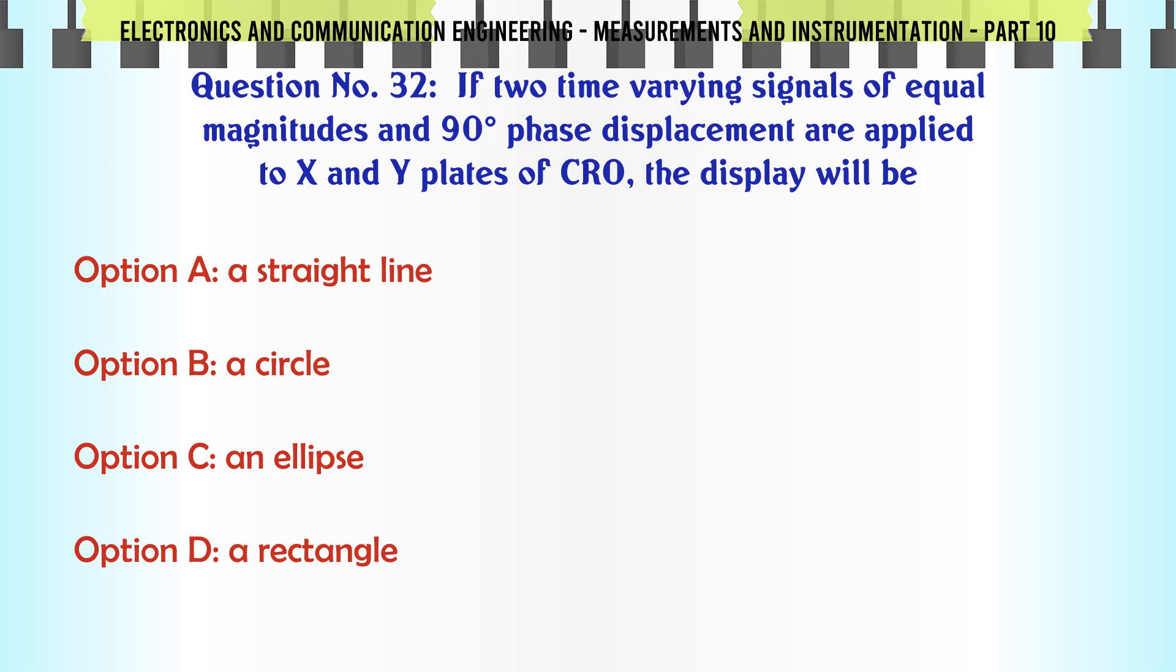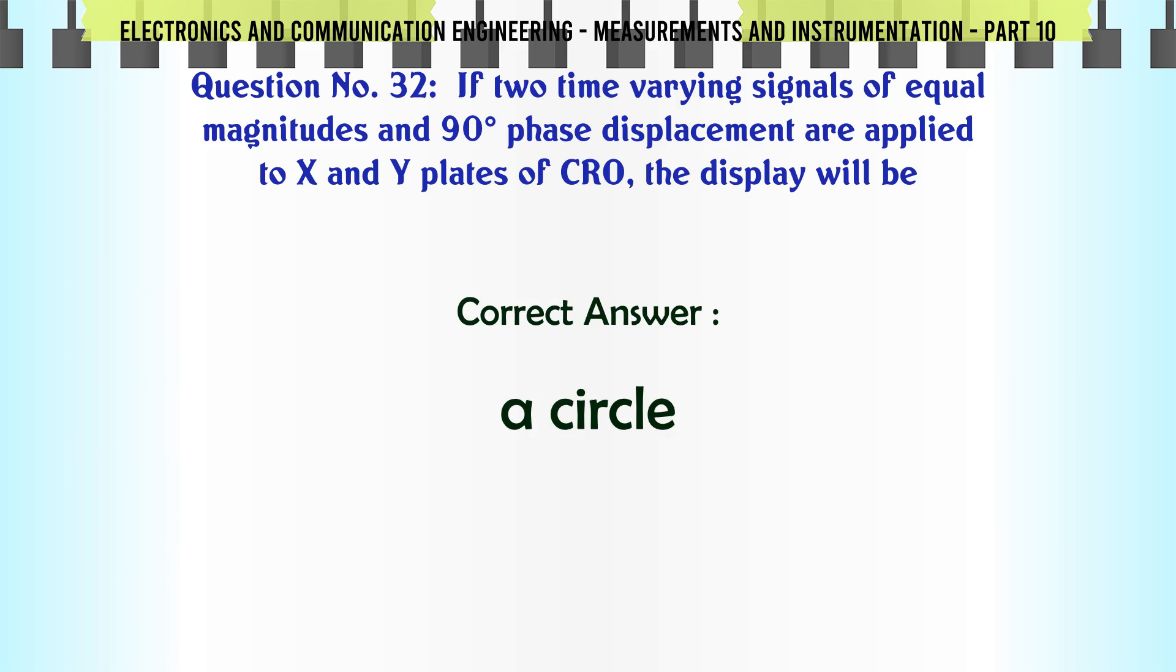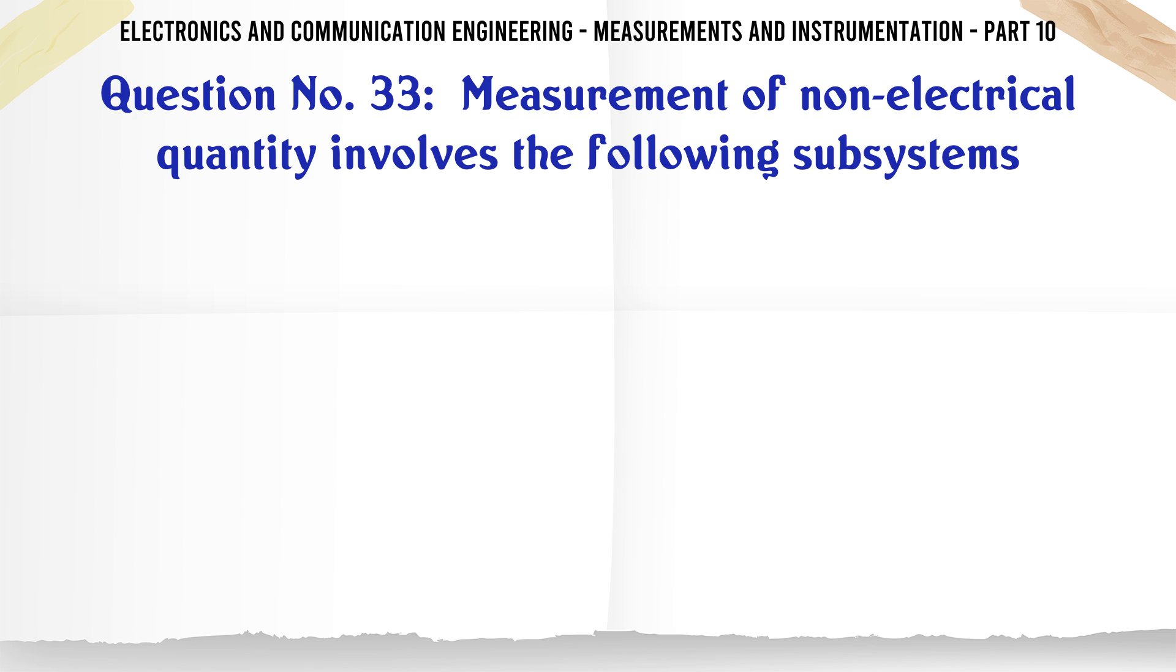If two time varying signals of equal magnitudes and 90° phase displacement are applied to X and Y plates of CRO, the display will be: A) a straight line, B) a circle, C) an ellipse, D) a rectangle. The correct answer is a circle.